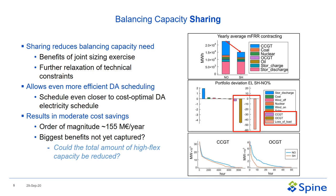But the question is: is this actually the biggest benefit, or is the bigger question whether the total amount of high-flexibility capacity could be reduced? The load duration curves for CCGTs and OCGTs shown below clearly show that the load duration curves decrease.